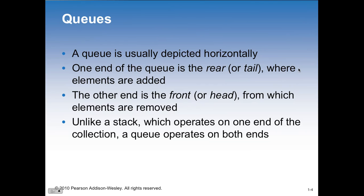One end of the queue is the rear or the tail, where elements are added. Get in the back of the line - this is where you end up going in when you enter. The other end is the front or the head, where elements are removed. You can use the head and the tail, or reverse the order if you wanted to. But the concept is you're keeping track of the order - who was first, who was second, who was third in line. Unlike a stack that operates at one end, the queue operates at both ends.